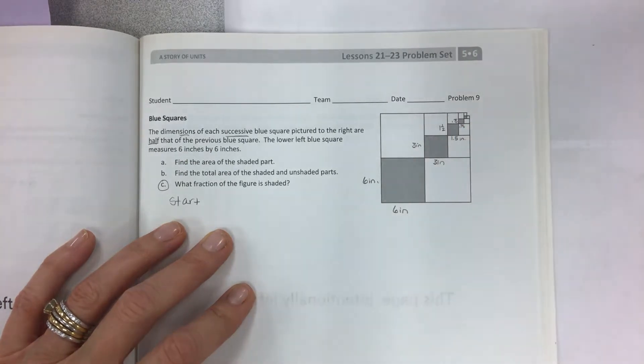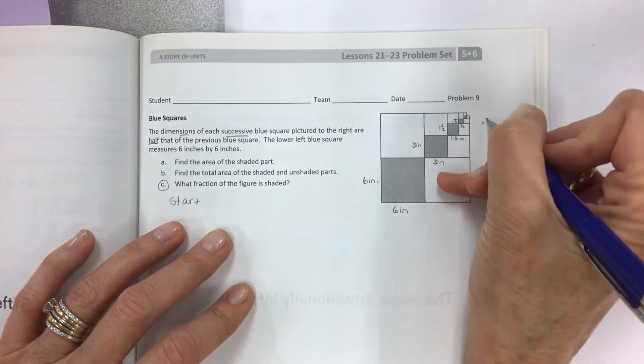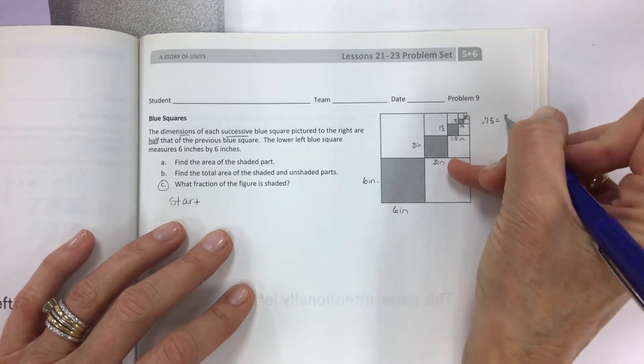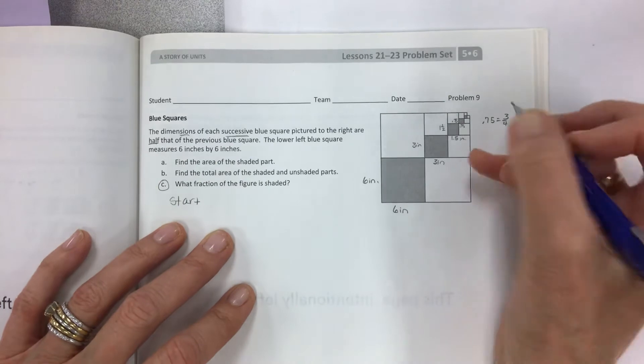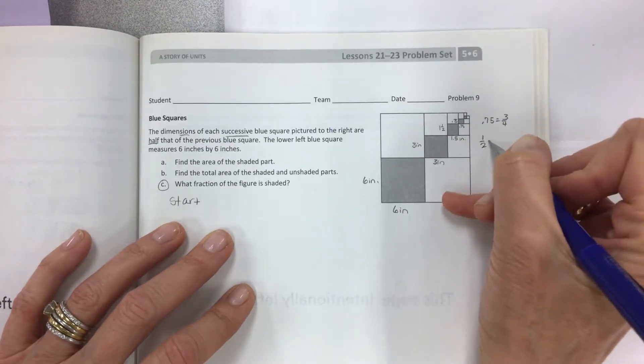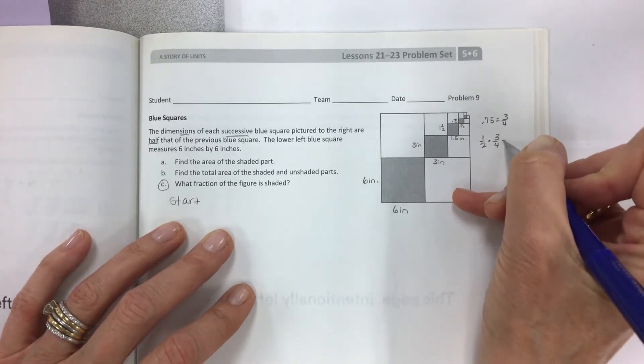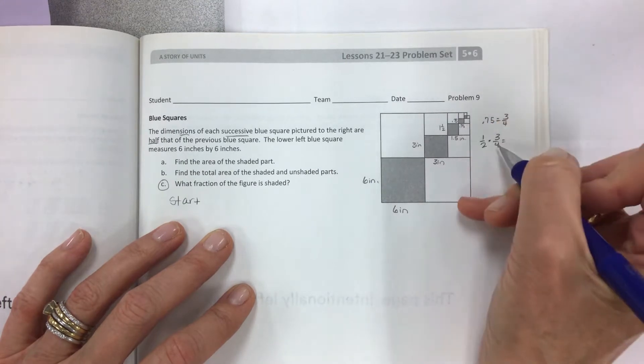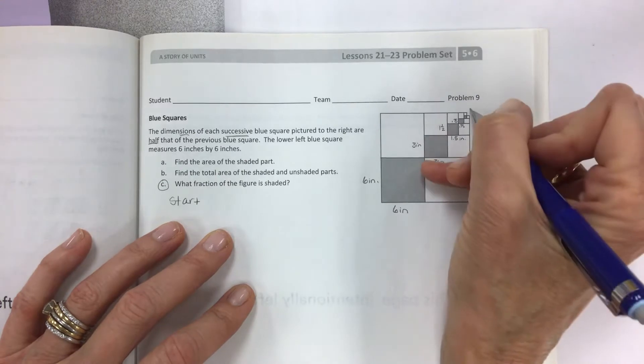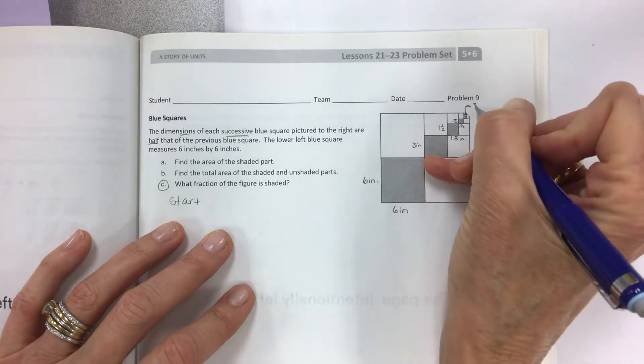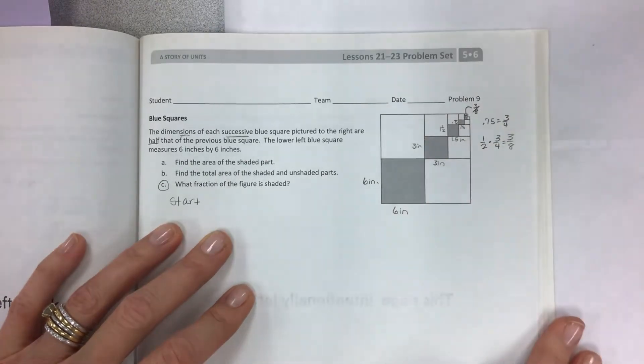Point seven five or three fourths, okay. And so that's for this one and we have yet another one and we need half of three fourths in order to find our measurement for the dimensions here. And when you multiply you're gonna get three eighths, and so for that little square there it's gonna be three eighths for each side. So go ahead and label each little square.